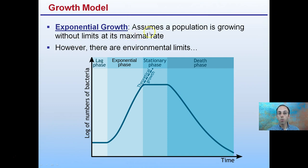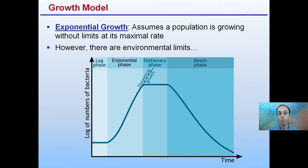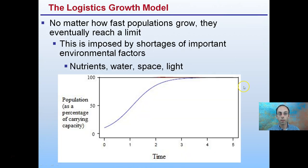This exponential growth assumes the population is growing without limits at its maximum rate. However, there are environmental limits no matter what system we're talking about. So while we do have an exponential phase, theoretically that would continue forever, but it doesn't because of environmental limits. We can even have the reverse — a death phase that occurs.